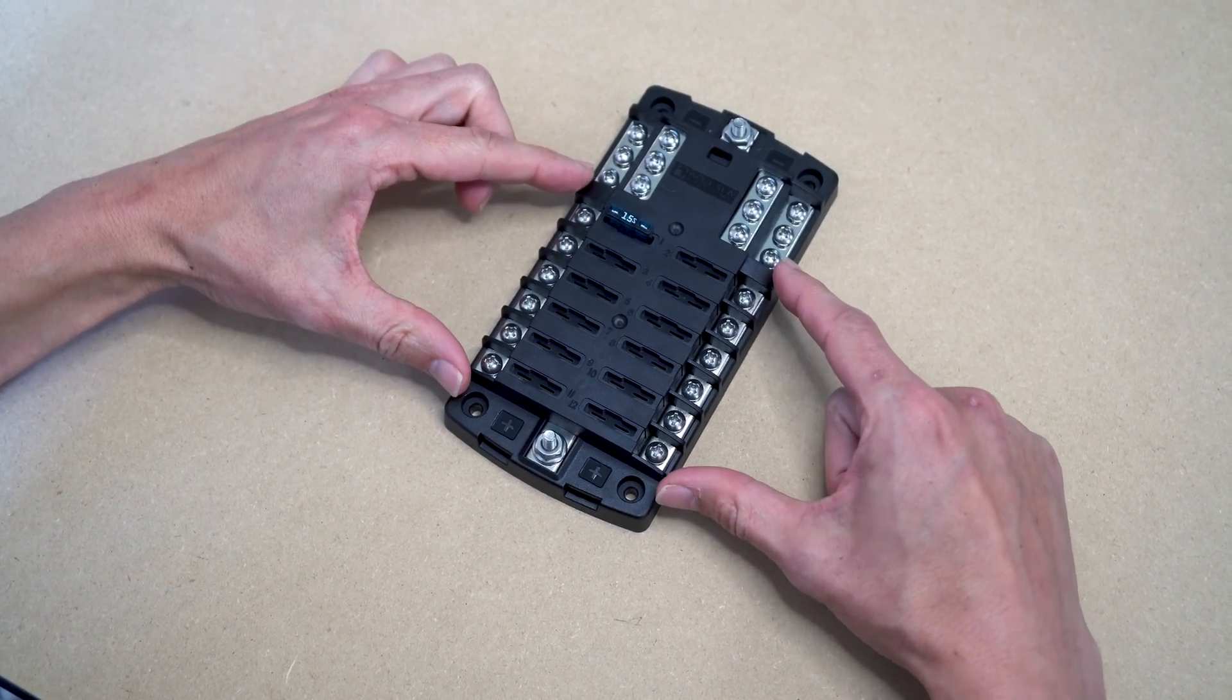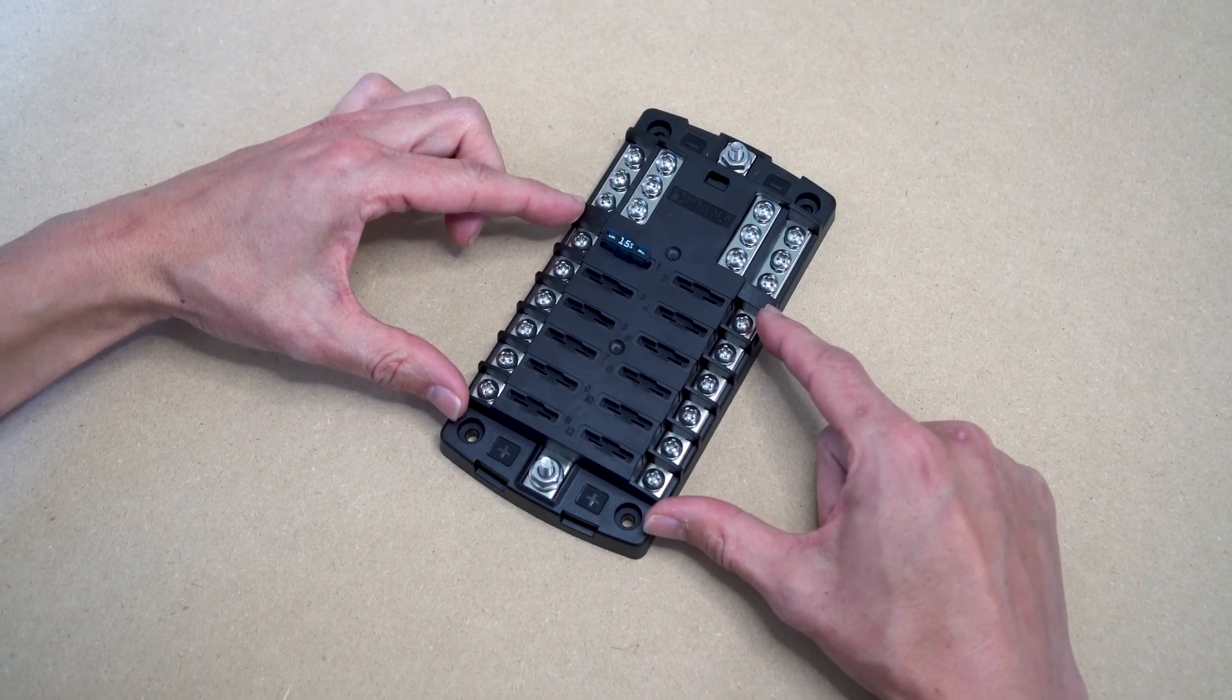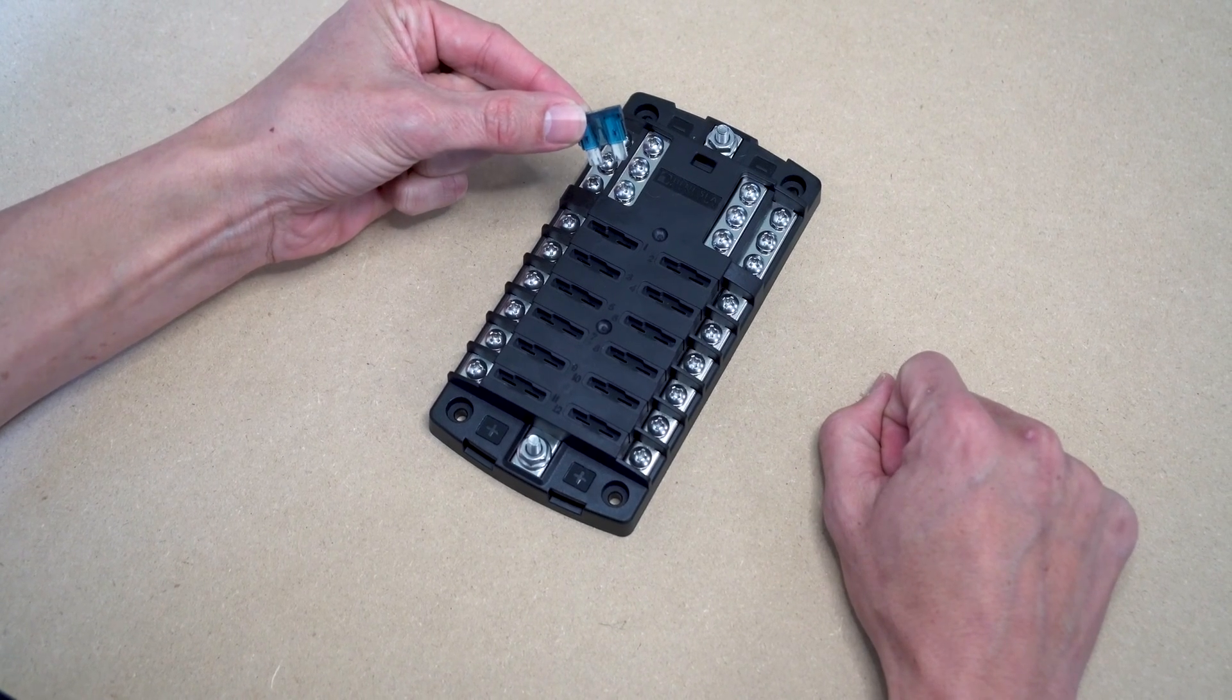In the middle of the unit is where you find the positive lines for each circuit. The fuse panel allows you to add standard automotive fuses like this one to each circuit to protect your electrical wiring from overheating.